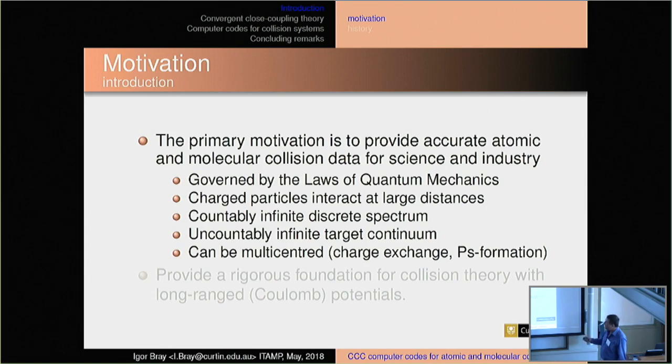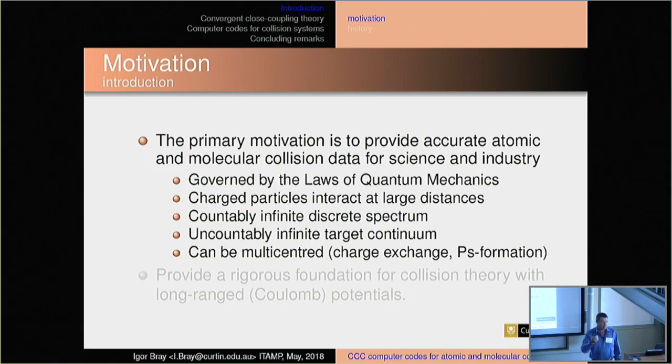The discrete spectrum is countably infinite; the target continuum is uncountably infinite. It is not correct to simply truncate — just take a few discrete states. It's formally a wrong thing to do. This was studied in the 1970s by Heller, Yamani, and Reinhardt. They showed that taking these states is like an equivalent quadrature rule for the summation and integration over the discrete subspace and the target continuum. So you can't get away with one or two states — that's not how you get integrals convergent.